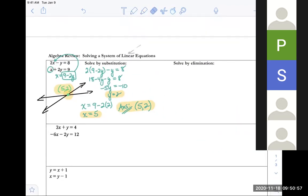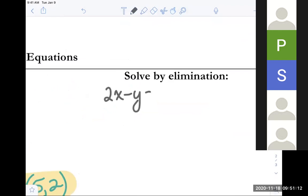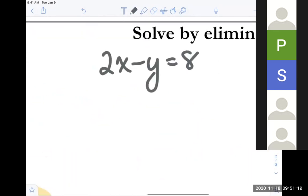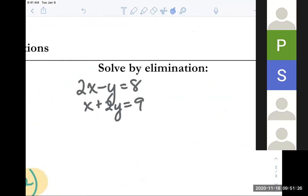Okay now elimination. Elimination can be really helpful when you have big numbers or when you have a little bit more complicated equations. But you can also use it on simpler ones here. So I'm just going to copy over that problem. 2x minus y equals 8. And x plus 2y equals 9. Okay now for elimination, you're trying to make it so that when you add the equations one of the variables will drop out. So because we already have a negative in front of the y on the first equation and a positive in front of the y on the second equation, we already have opposite signs. I'm going to choose to try to get rid of y.